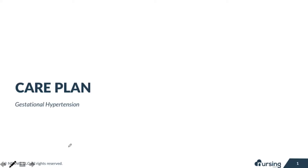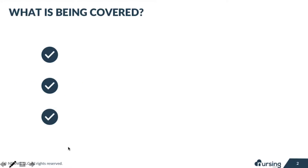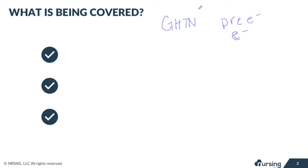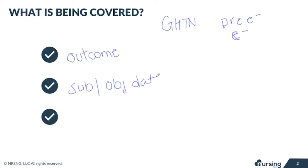Hey guys, today we're going to go over gestational hypertension and how to put this on a care plan. We're going to cover gestational hypertension, and also make sure you understand the difference between that and preeclampsia and eclampsia, because they can all run together and some of our assessment data will overlap. We'll look at the expected outcome, the subjective and objective data, nursing interventions, and the rationales.